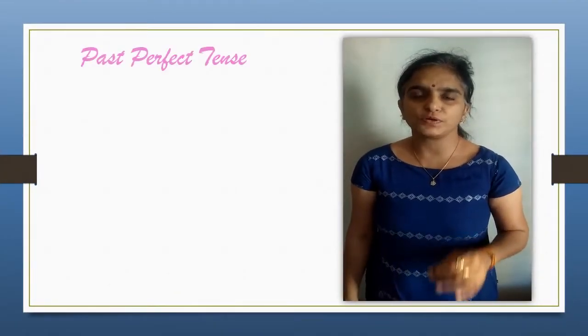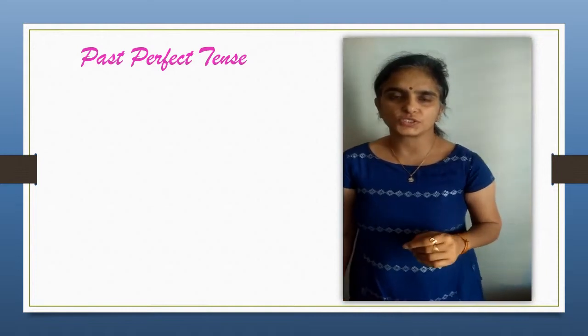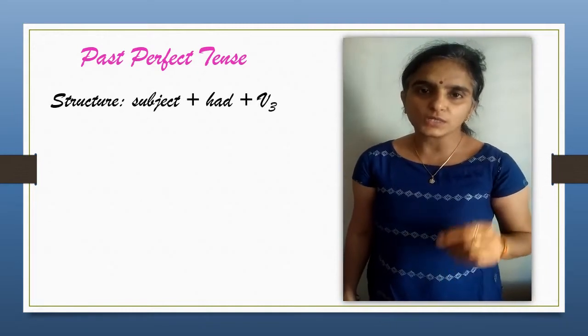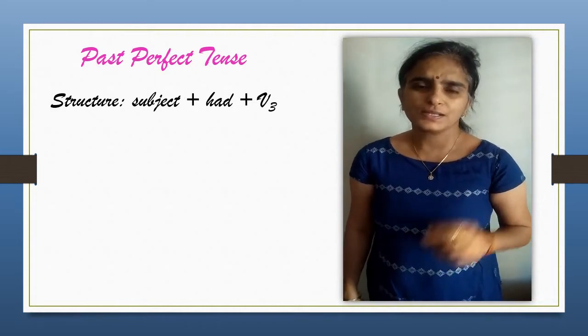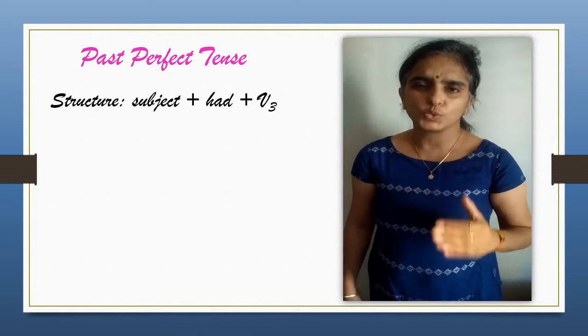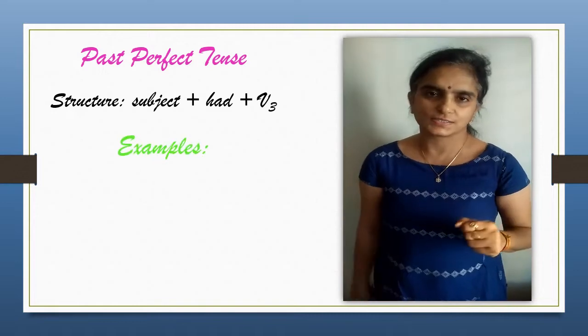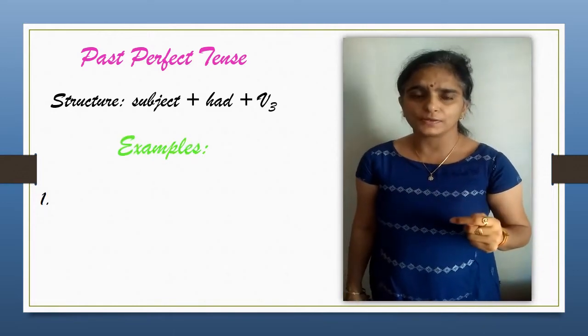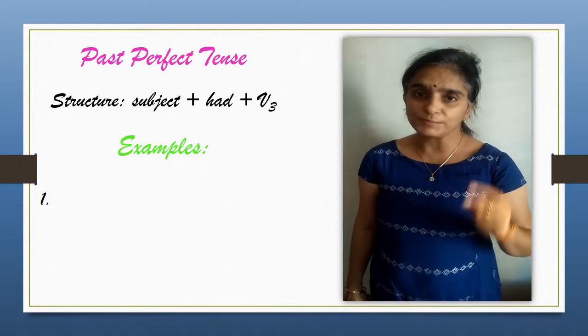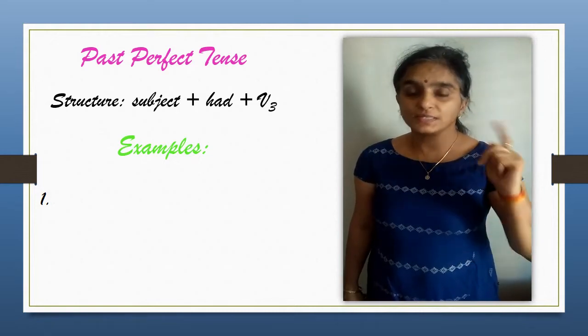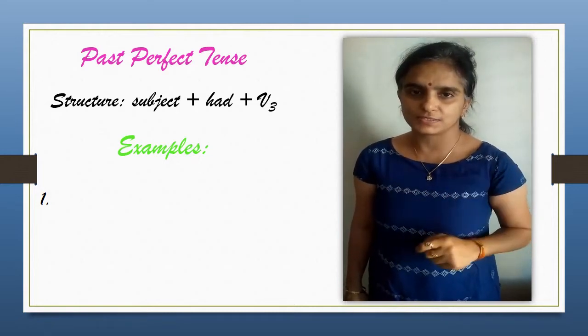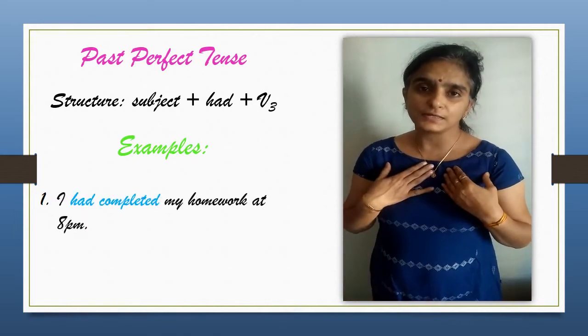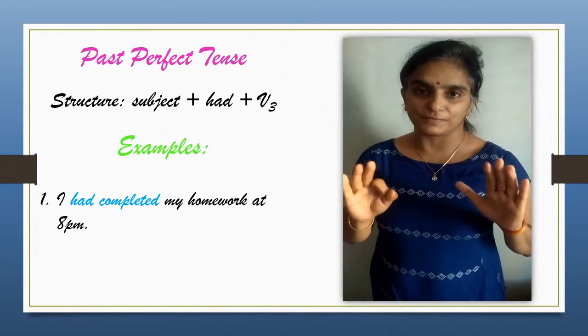Past Perfect tense. Structure: subject plus had plus third form of verb. Let's understand this structure with the help of a few instances. Instance one: it is used to describe an action completed before a definite point in the past. For example, I had completed my homework at 8 pm.